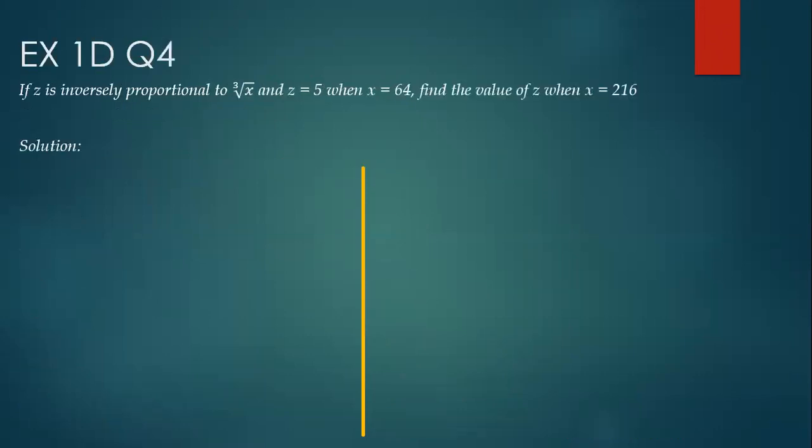Exercise 1D, question number 4. If z is inversely proportional to the cube root of x, and z is 5 when x is 64, find the value of z when x is 216. Since z is inversely proportional to the cube root of x, we can write it as z times the cube root of x equals k.